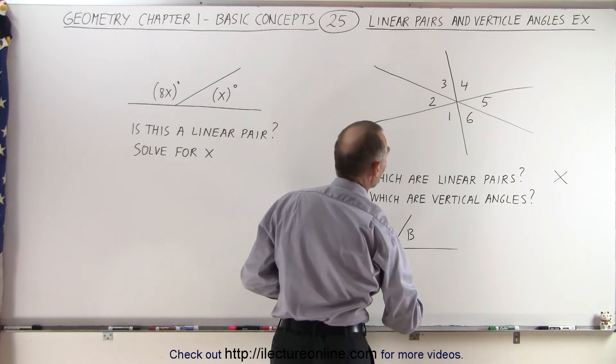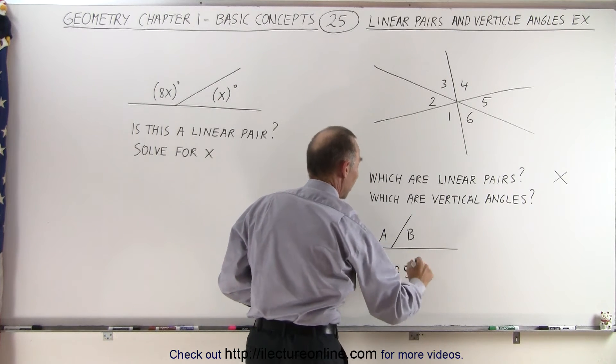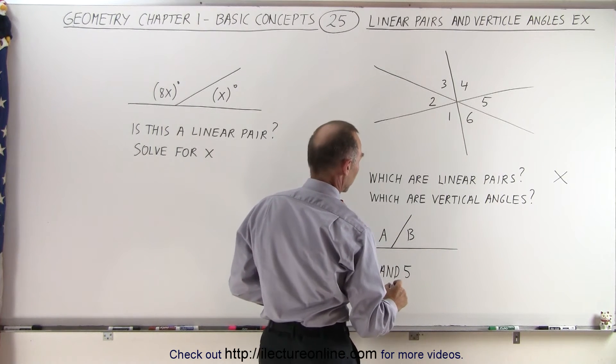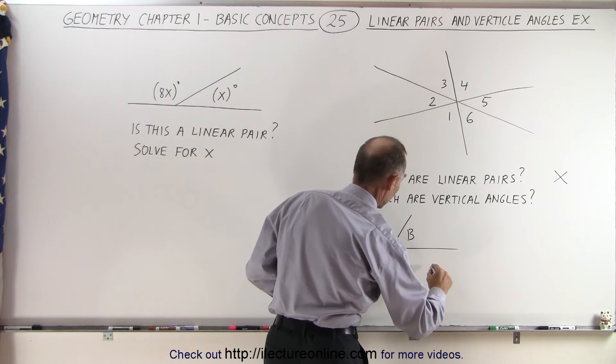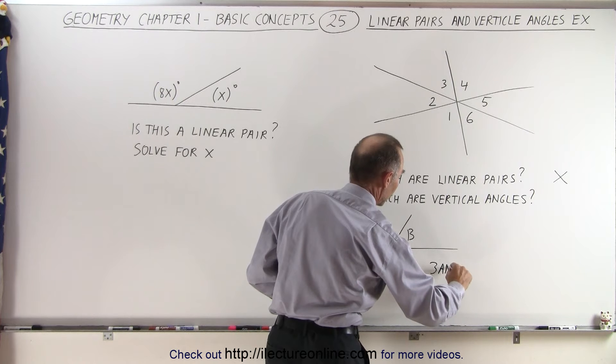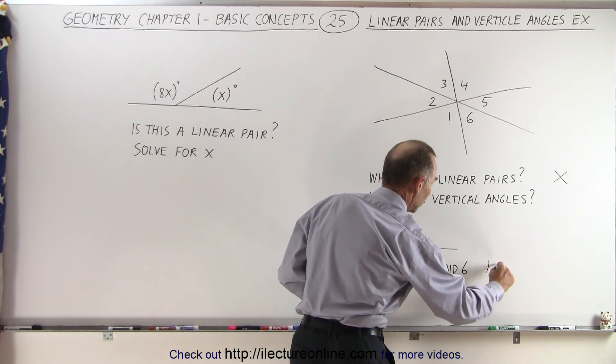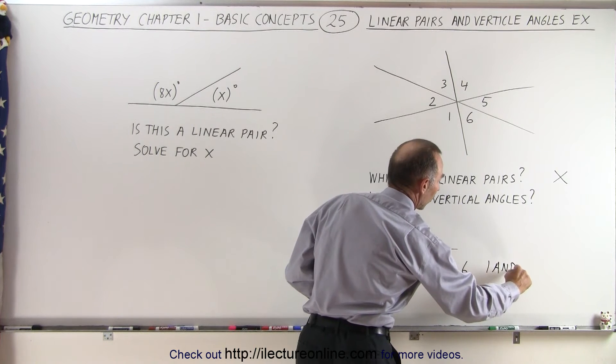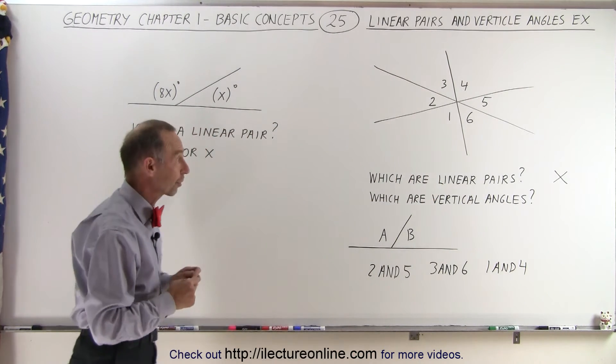So let's write that down. We have two and five are vertical angles. We have three and six. Three and six are vertical angles. And one and four. One and four are a pair of vertical angles, so there's three pairs of vertical angles.